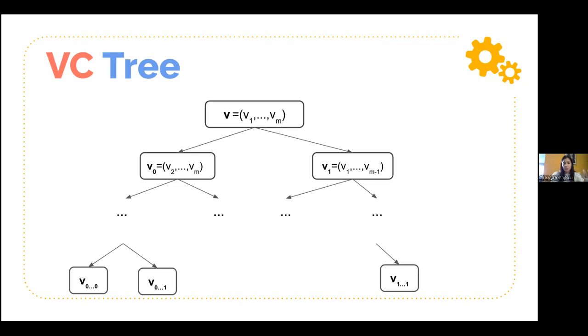The prover can choose where to stop this process. It doesn't have to arrive to a tree that has only single elements in the leaves. It can have just smaller vectors, which are chunks of the original one.